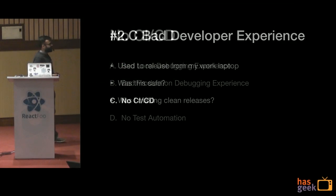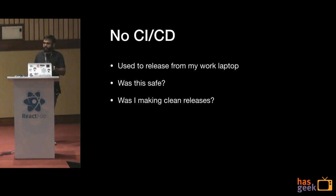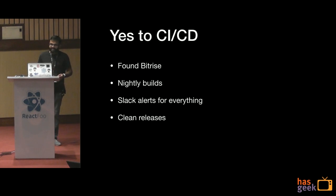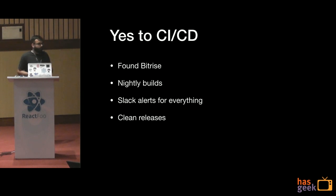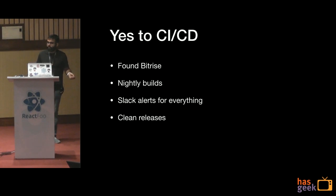No CI/CD was another pain point. Even many months after I joined, we were still releasing to production from my own laptop. Imagine the problems that could cause — the folder I was using to release was the same one I worked in. Did I do a clean npm install? Did I clean Xcode and Android Studio before releasing? We tried different CI/CD solutions and decided to stick with Bitrise because it gives Mac machines. Over time we set up multiple workflows — for example, a nightly build. We get Slack alerts for everything: whether the build failed or was successful. Releases are made using Bitrise now, built on clean instances so there's no chance of them being dirty. Bugsnag source maps are also uploaded from here.